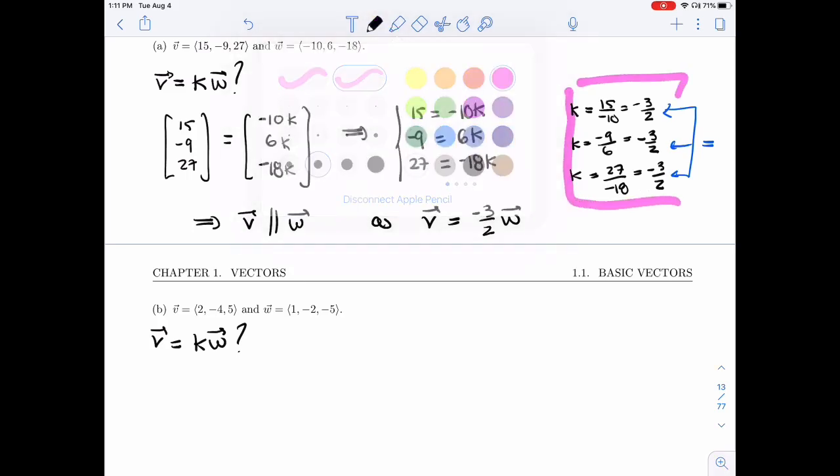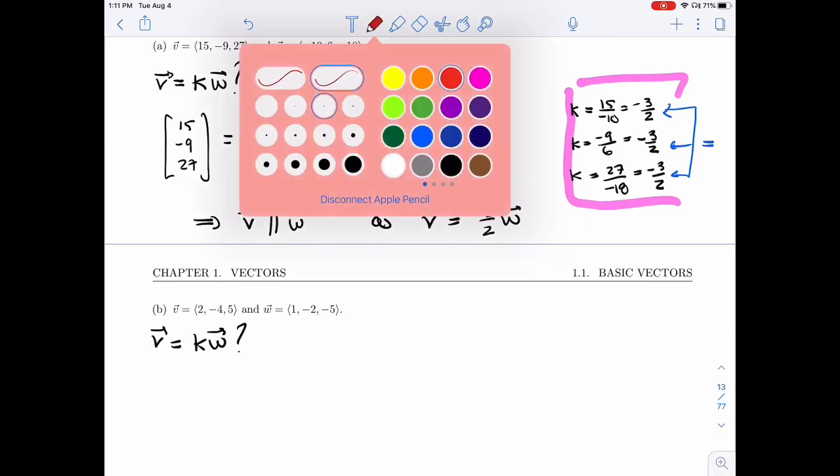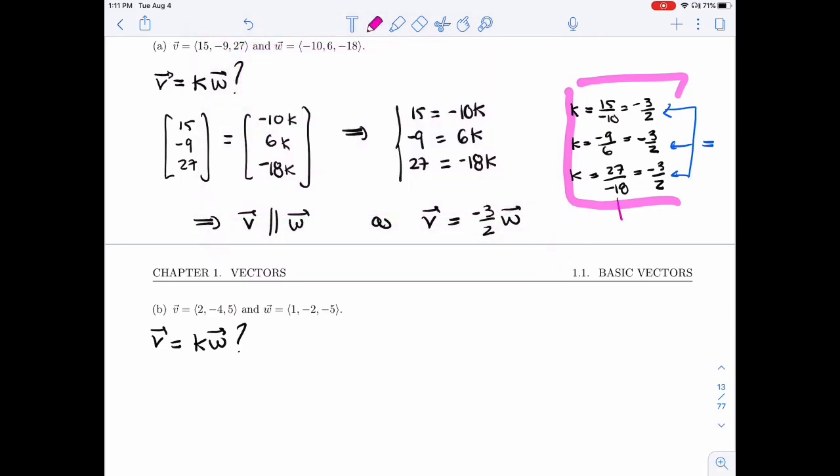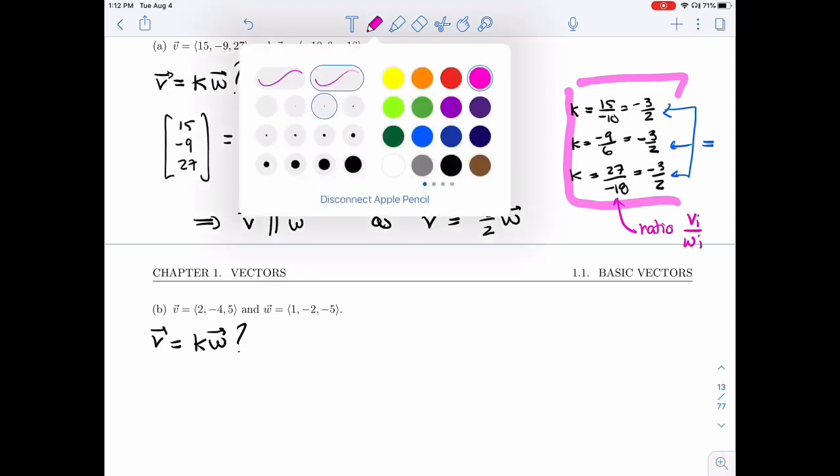If you look at what I'm doing, is I'm taking the ratios of VI over WI. All of those ratios need to be the same. So let's test the ratios.